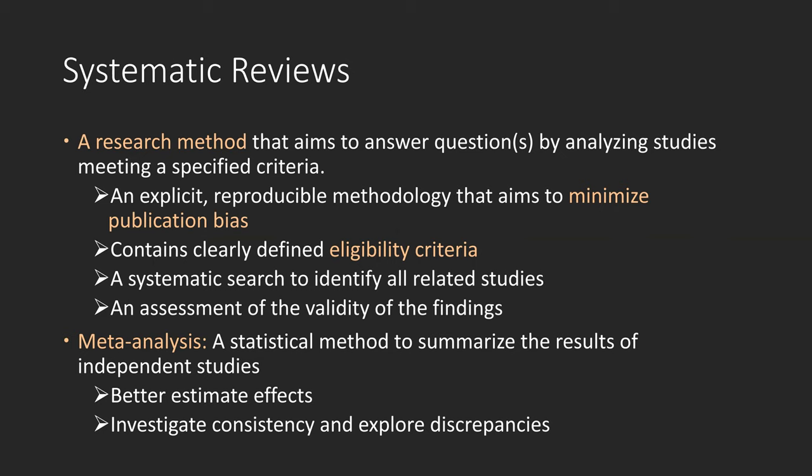Over the past decade, the number of systematic reviews published in medicine, psychology, and education has dramatically increased. A systematic review should have an explicit reproducible methodology that aims to minimize publication bias. Publication bias occurs when results of published studies are systematically different from unpublished studies — that is to say, studies with significant results are more likely to be published than those with no significant results.